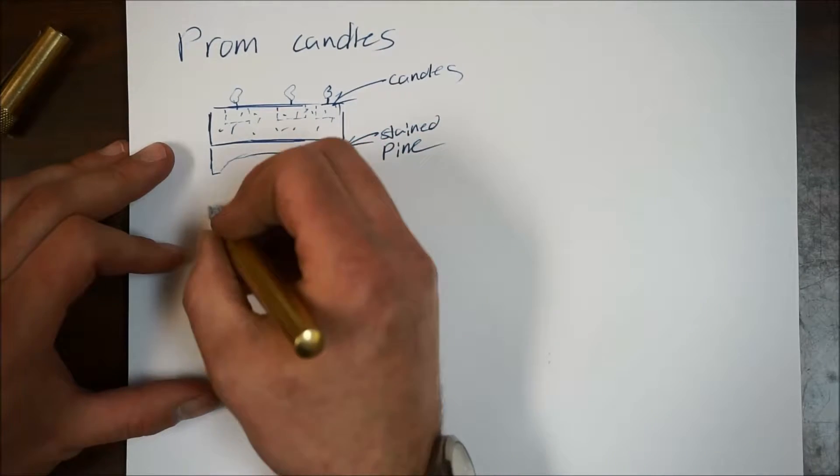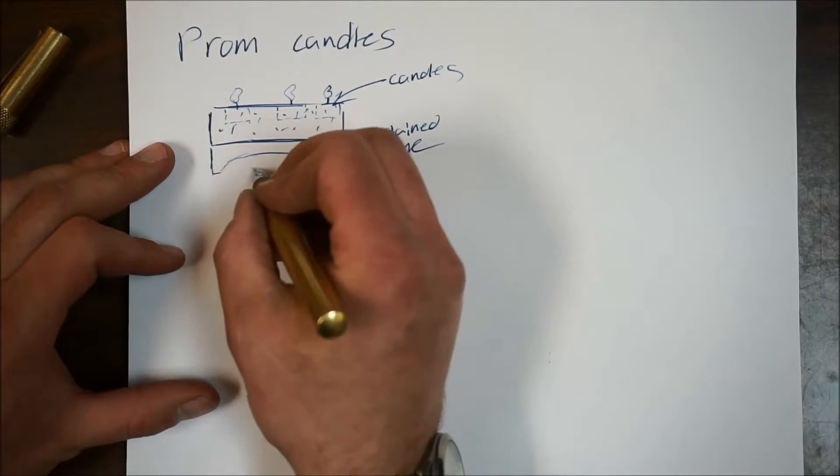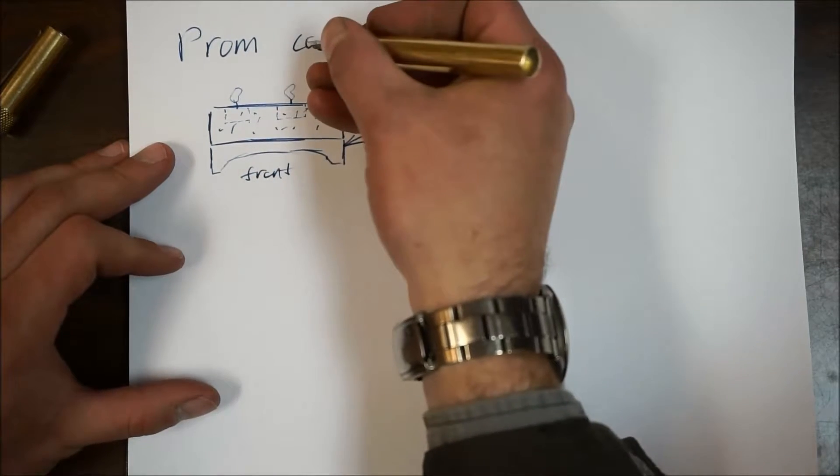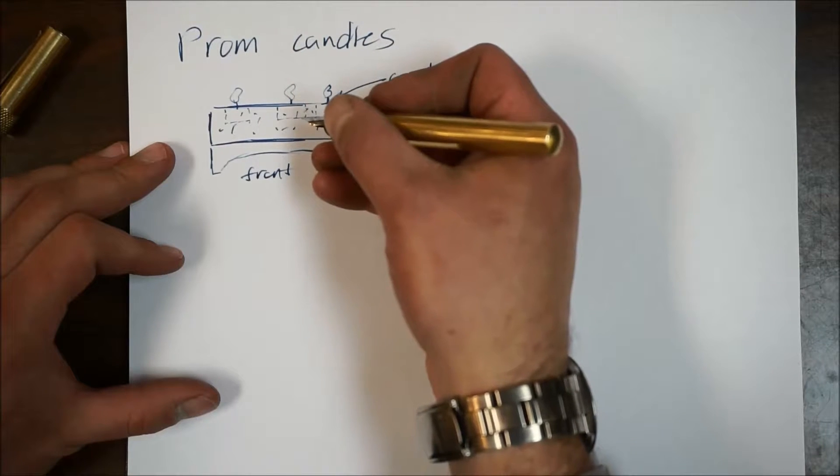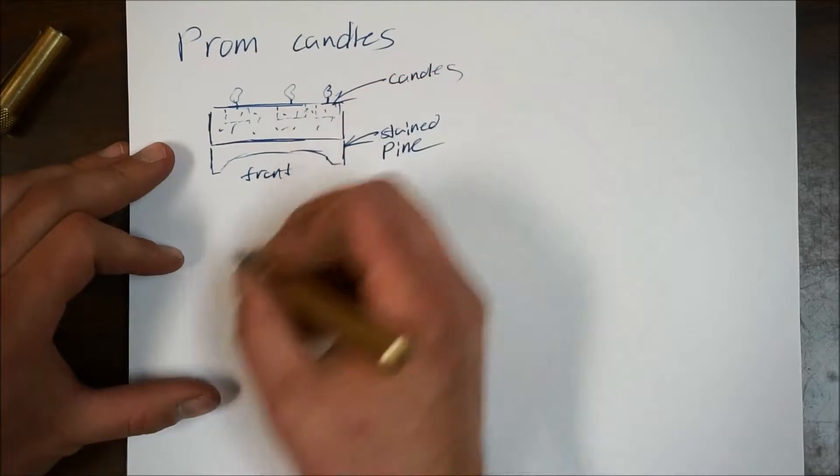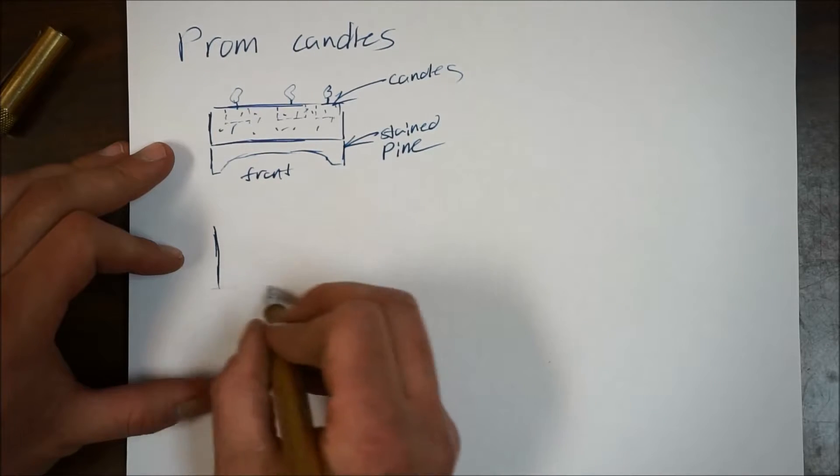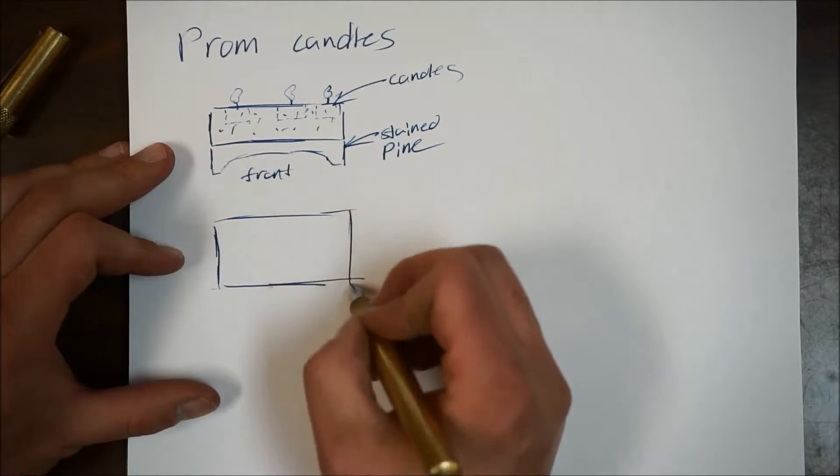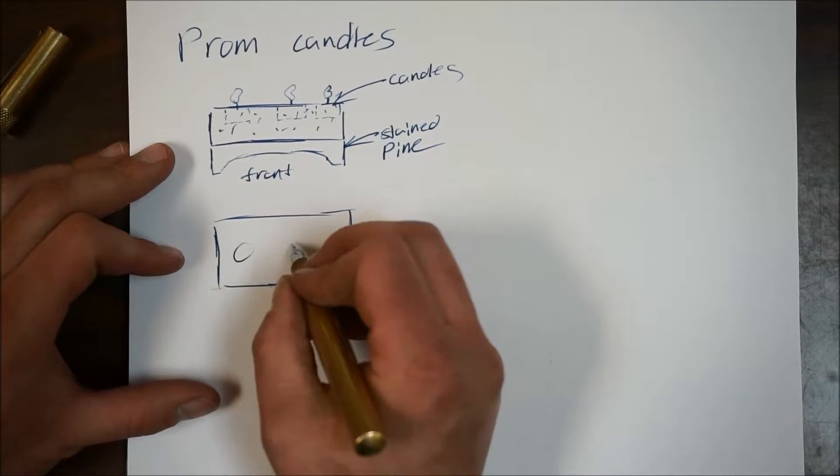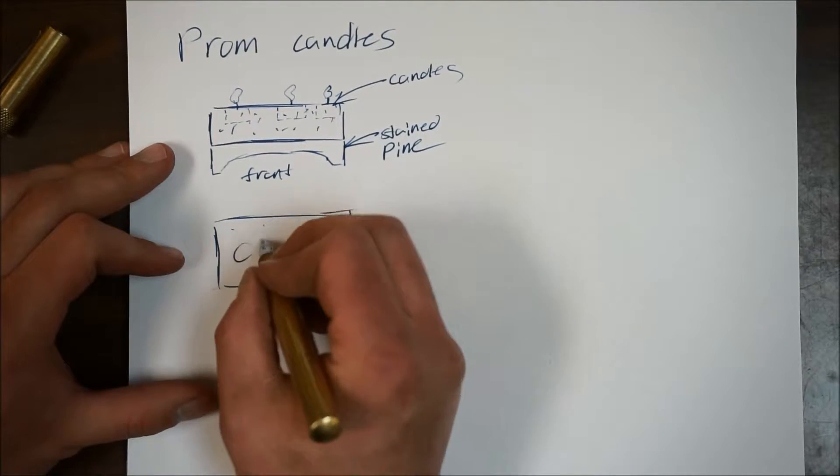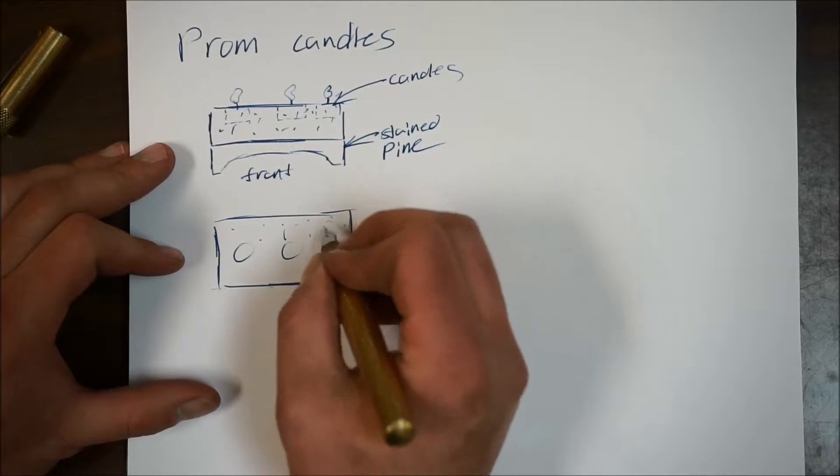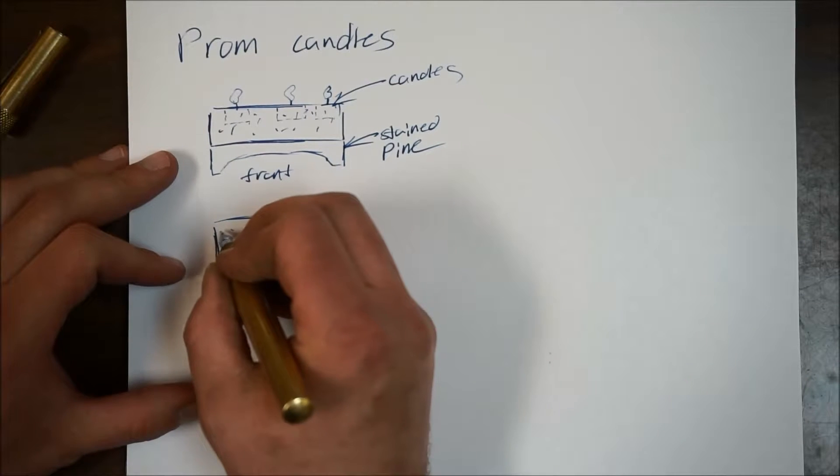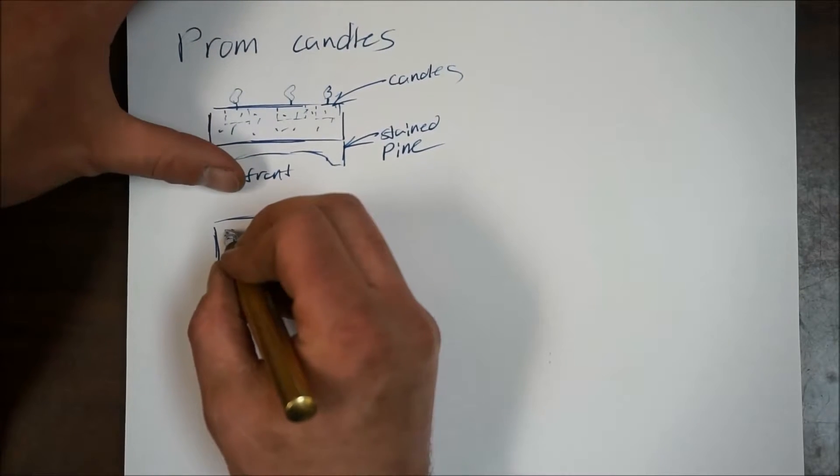And since we did that, we should probably do a top view. This is front, and once again I'm screwing this up - the top view should be up here, the front view should be down here. Let's take a look at this from the top. Okay, we have one, two, three. All right, and this will give us a good chance to use our hidden lines here.